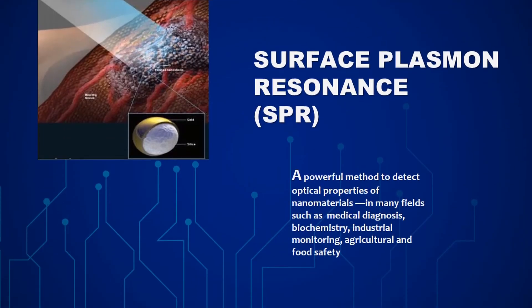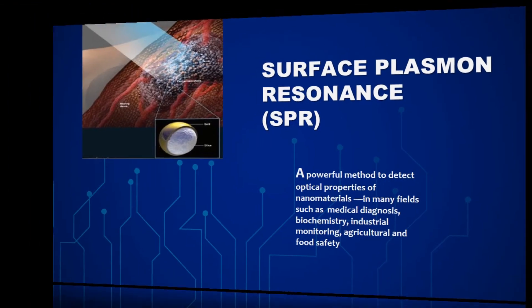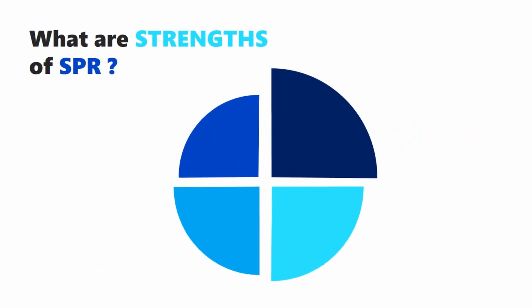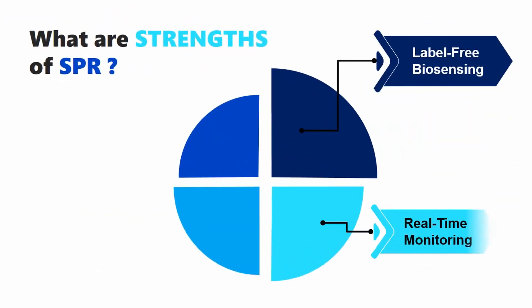SPR is a powerful method to detect optical properties of nanomaterials. The strengths of SPR are label-free biosensing, real-time monitoring, excellent sensitivity, and high efficiency.